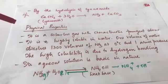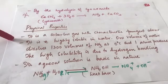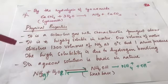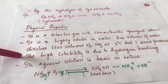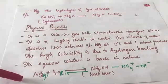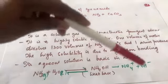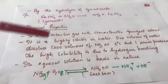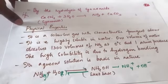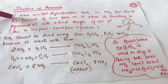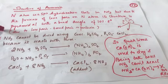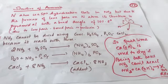Physical properties of ammonia: it is a colorless gas with a characteristic pungent odor. It is highly soluble in water — one volume of water dissolves almost 1300 volumes of ammonia at 0°C and one atmospheric pressure. This high solubility is due to hydrogen bonding. Its aqueous solution is basic: NH3 + H2O ⇌ NH4⁺ + OH⁻. Ammonia is sp3-hybridized with a bond angle of 107.8° due to lone pair–bond pair repulsion.